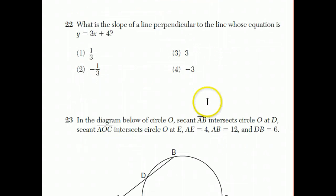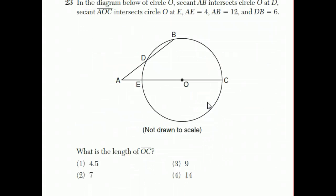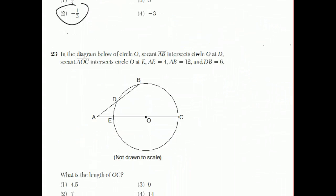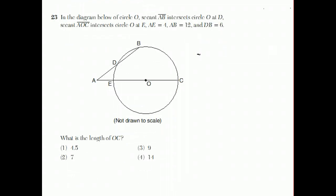Moving on to question 23. In the diagram below, circle O, you have secant AB that cuts through the circle at D. AOC is a secant, it goes through O. Now, very important, O is the center there. That could be important. And AE equals 4, AB equals 12, and DB equals 6. They want to know the length of OC. Let me draw the information.